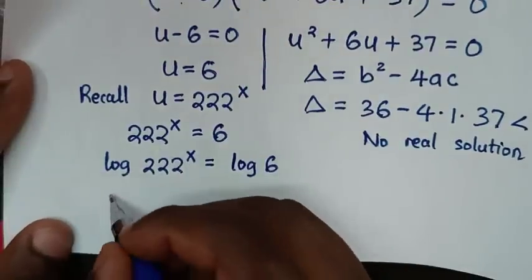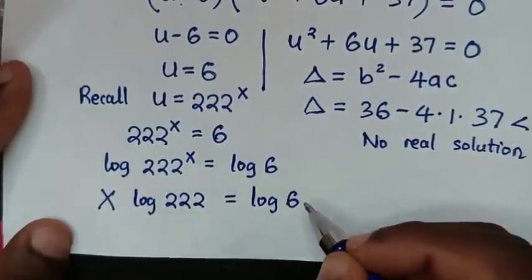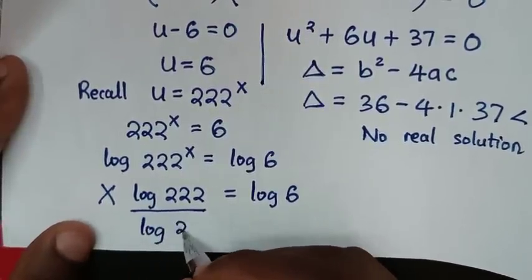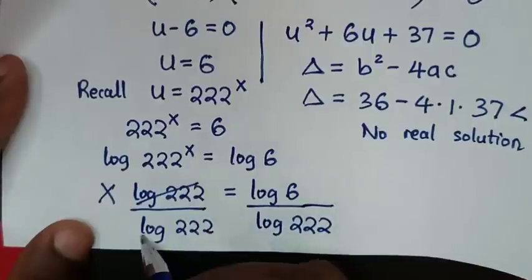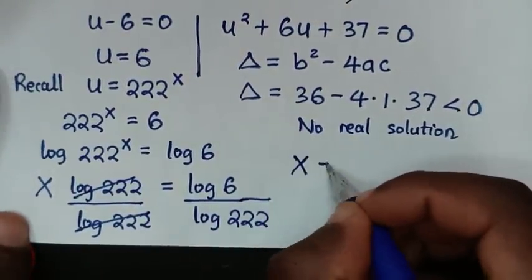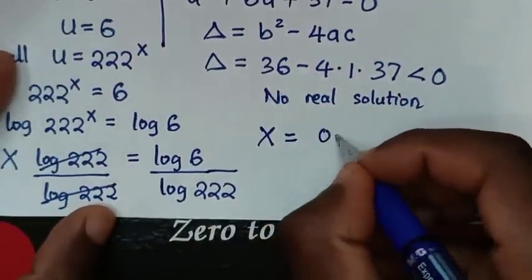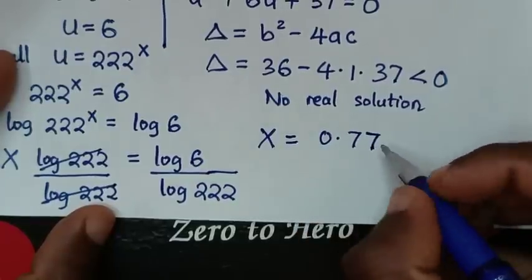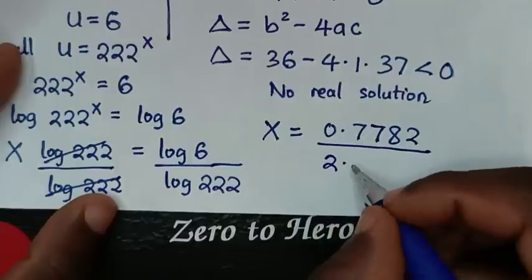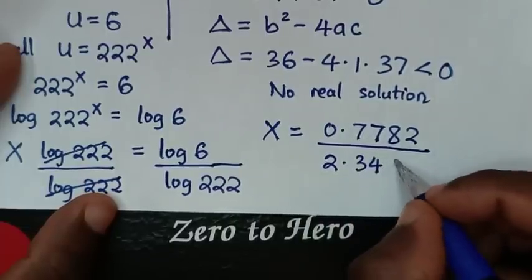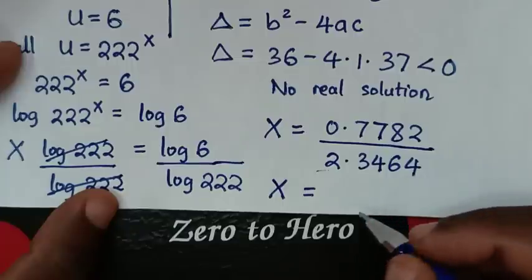The power of x moves to the front, giving x times log of 222 equals log of 6. Dividing both sides by log of 222, x equals log of 6 over log of 222. Substituting into the calculator: log of 6 is 0.77982, and log of 222 is 2.34640. So x equals 0.77982 divided by 2.34640.